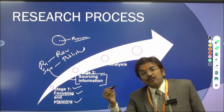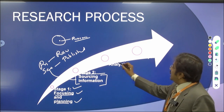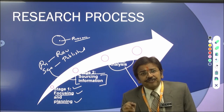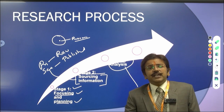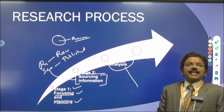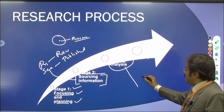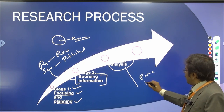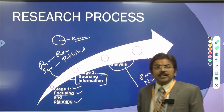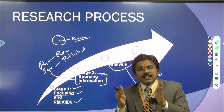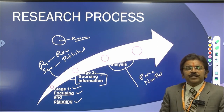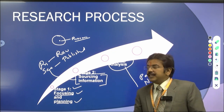In stage 3, you are going to do your analysis, which means using different statistical tools for interpreting your data. The data has been received and now you perform the analysis. The analysis can be done using parametric or non-parametric tools — it depends upon your study. If you have planned a study based on assumptions, you apply a parametric test; if there are no assumptions, you use a non-parametric test.